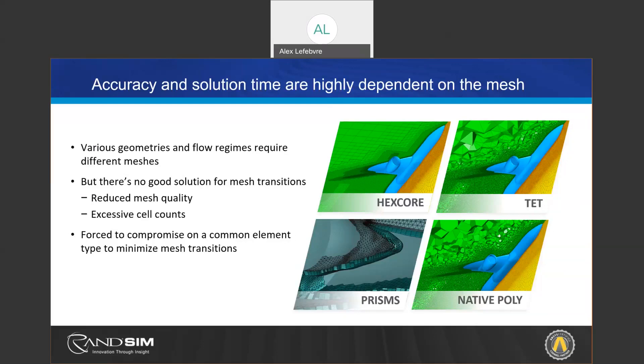Ideally in a simulation one would want to combine two different types of elements — for instance, polys or tet close to the geometry for accuracy in capturing small features, and hex core in the far field. However, historically this has been very difficult, just because linking two different cell elements of different topologies is a difficult mathematical problem. And this is where the mosaic technology comes in.